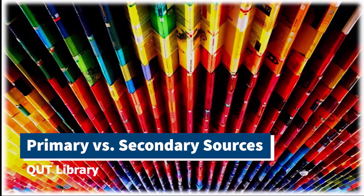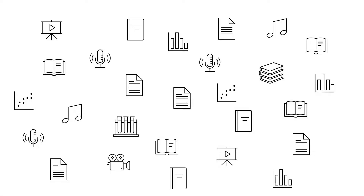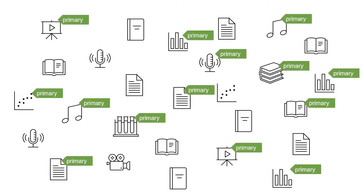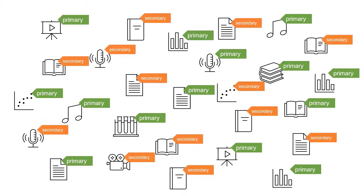Before you start looking for information for your assignment, it helps to know what kinds of information are available. One of the main differences between types of information is the difference between information from a primary source versus information from a secondary source.